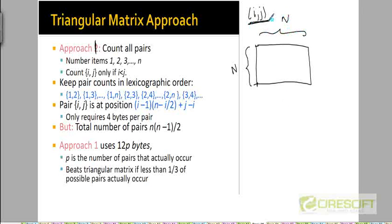The count of the pair item i, item j will be stored in the cell corresponding to the ith row and the jth column. This cell will keep track of counts of how many times item i appear together with item j.